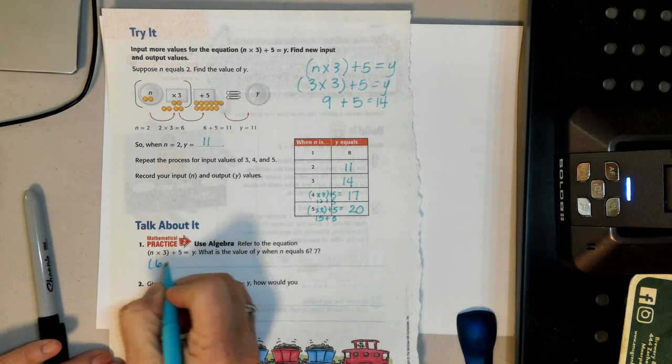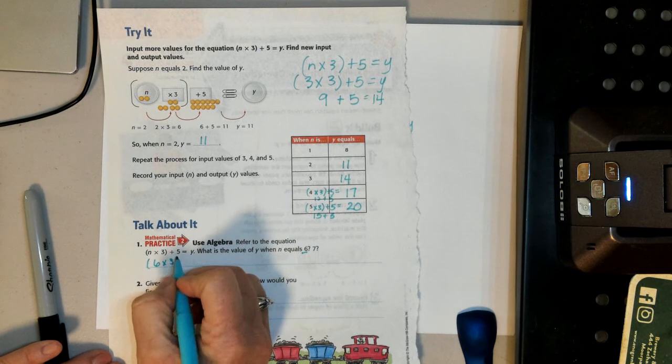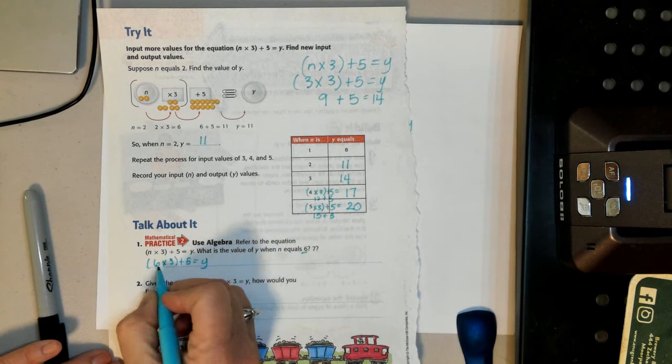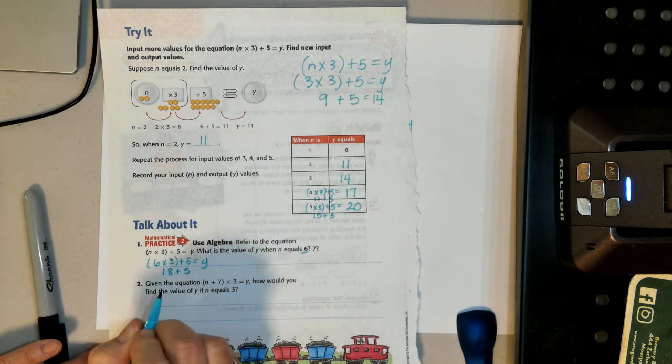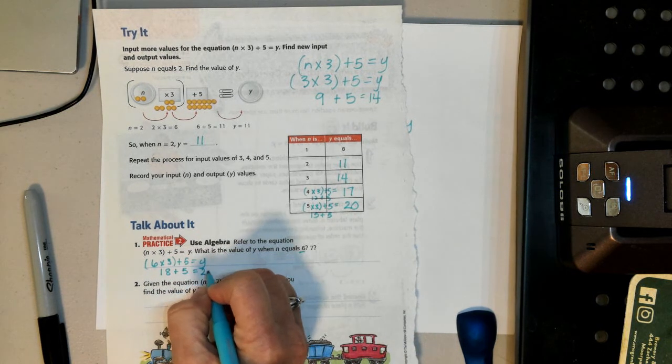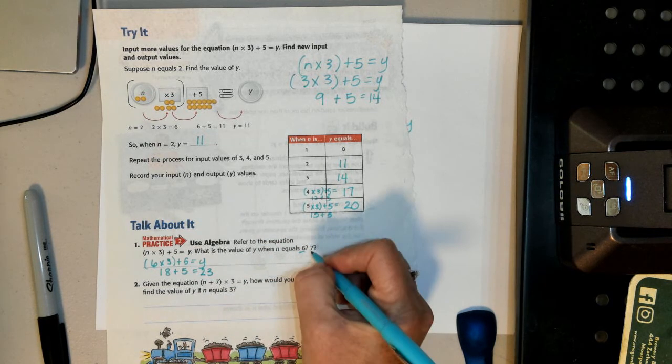So 6 times 3, I'm putting this 6 into the equation, plus 5 equals y. 6 times 3 is 18 plus 5 is 23. And then, you can do that with the 7.